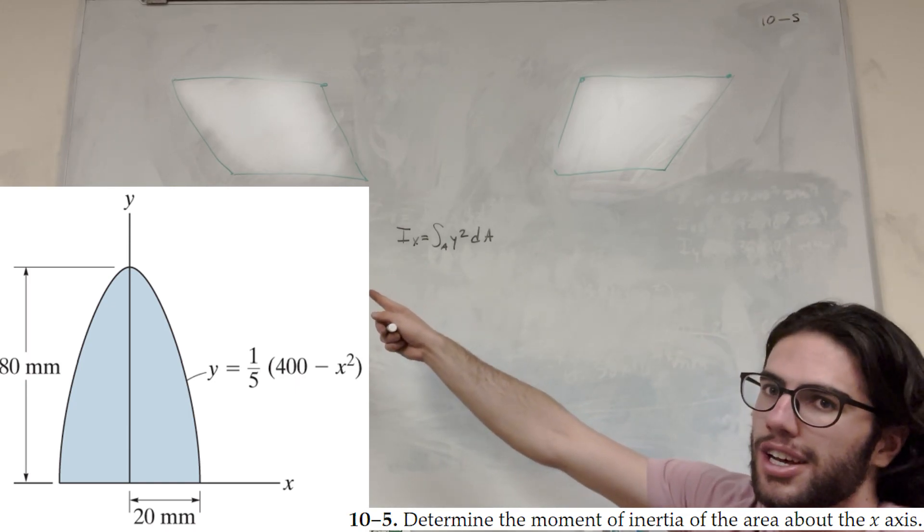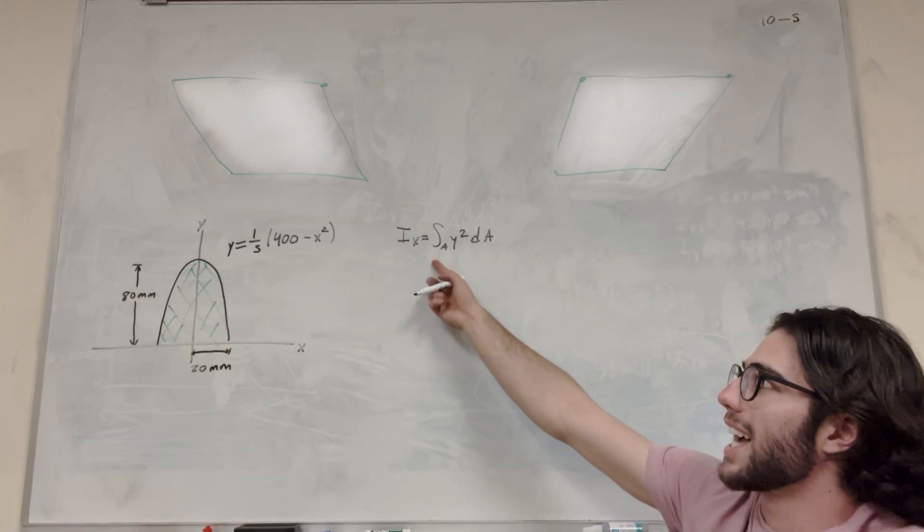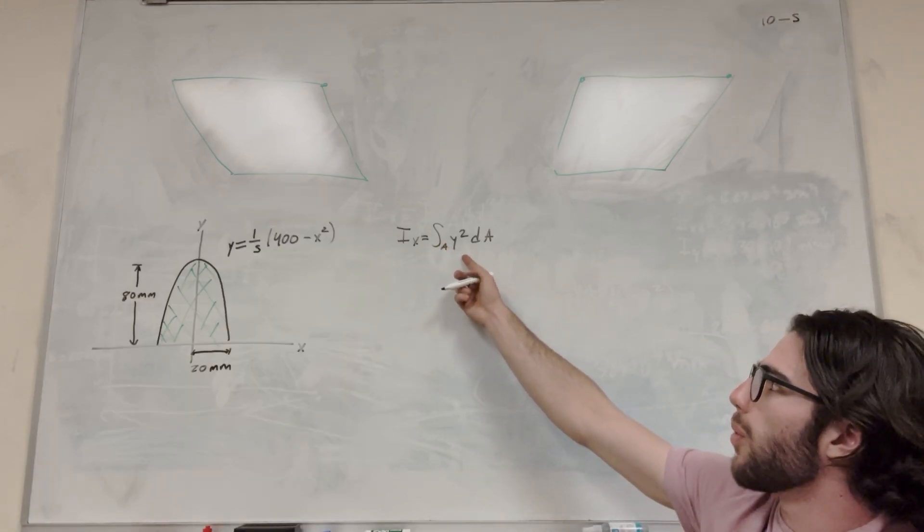So we're given this equation, and the equation that we're going to be using is the moment of inertia on the x-axis is equal to the integral of y squared over the area.